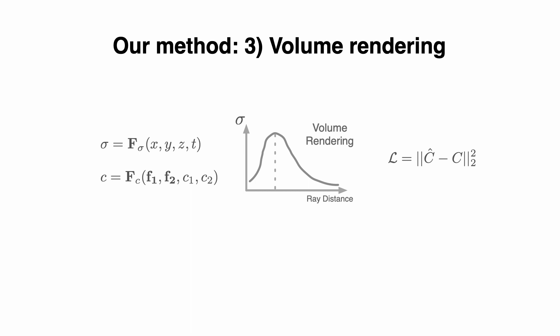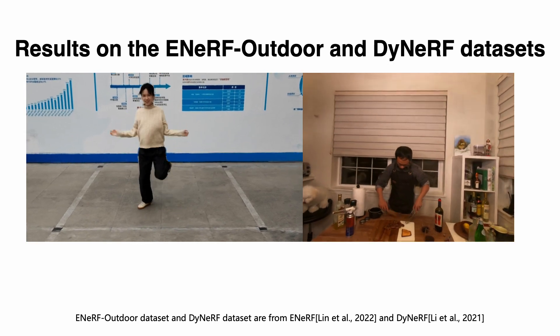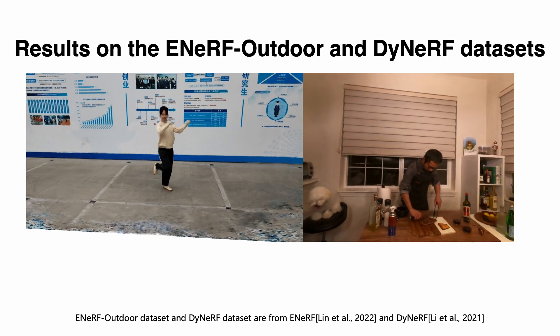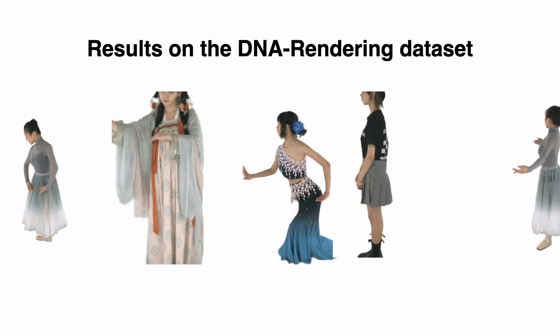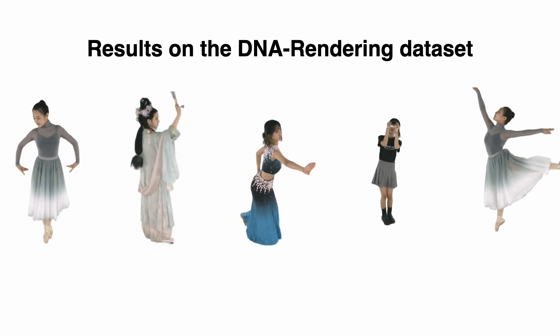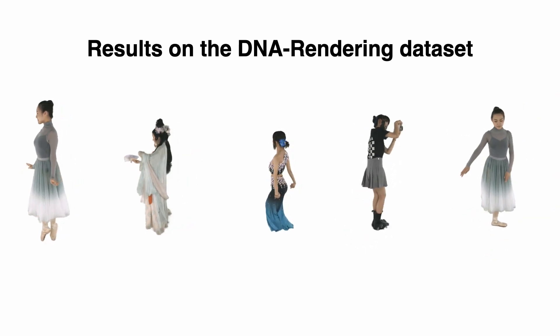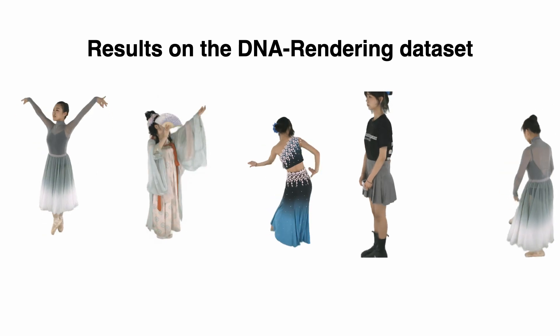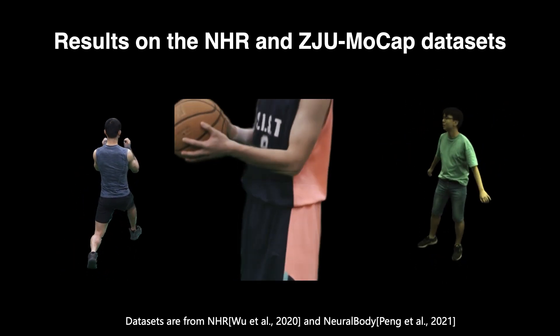IM4D is trained with only RGB supervision with some regularization terms. Here we show our rendering results on the E-NERF Outdoor and DINERF datasets, as well as more rendering results on the DNA rendering datasets. Finally, we present our rendering results on the NHR and ZJU MOCAP datasets.